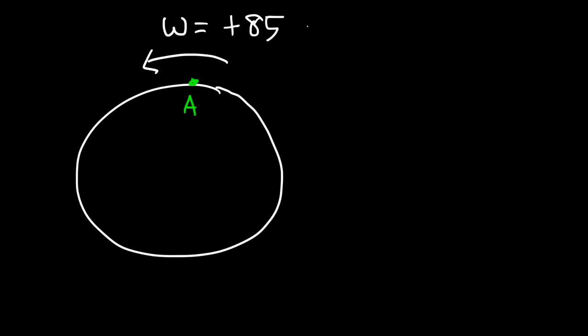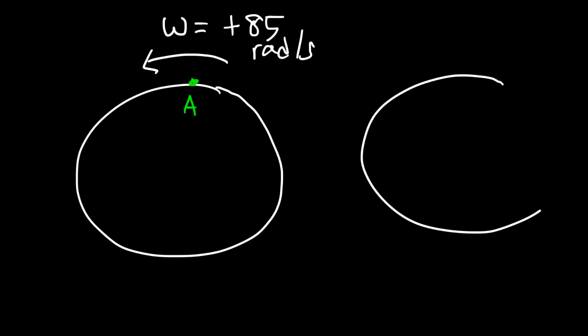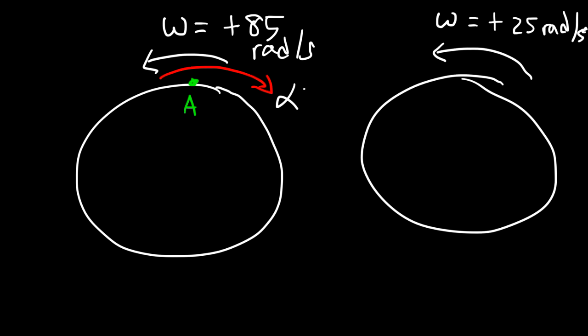So for our example, at point A the disk is spinning with an angular velocity of positive 85 radians per second in the counter-clockwise direction. After some time, it moves at positive 25 radians per second, still counter-clockwise. Because the disk is slowing down, the angular acceleration must be negative — meaning it is directed in the clockwise direction, opposite to the angular velocity which is directed counter-clockwise.